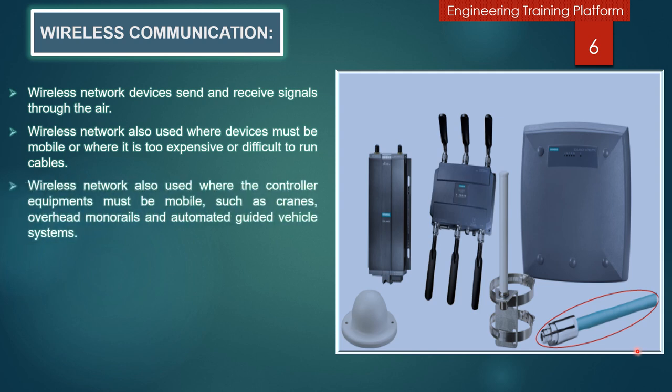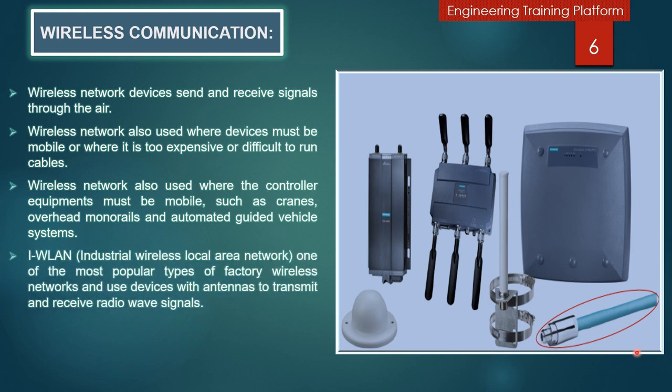Wireless networks are also used where control equipment must be mobile, such as with automated guided vehicle systems, overhead monorail, and cranes. One of the most popular types of factory wireless networks is IWLAN, which stands for Industrial Wireless Local Area Network. IWLAN uses devices with antennas to transmit and receive radio wave signals.